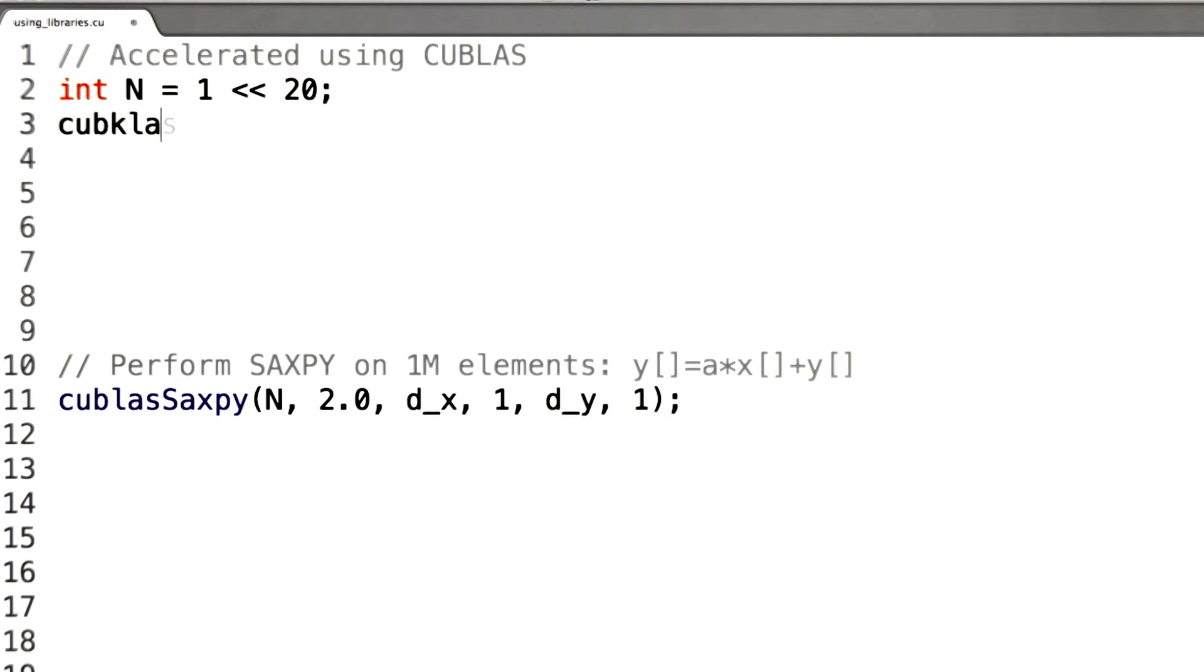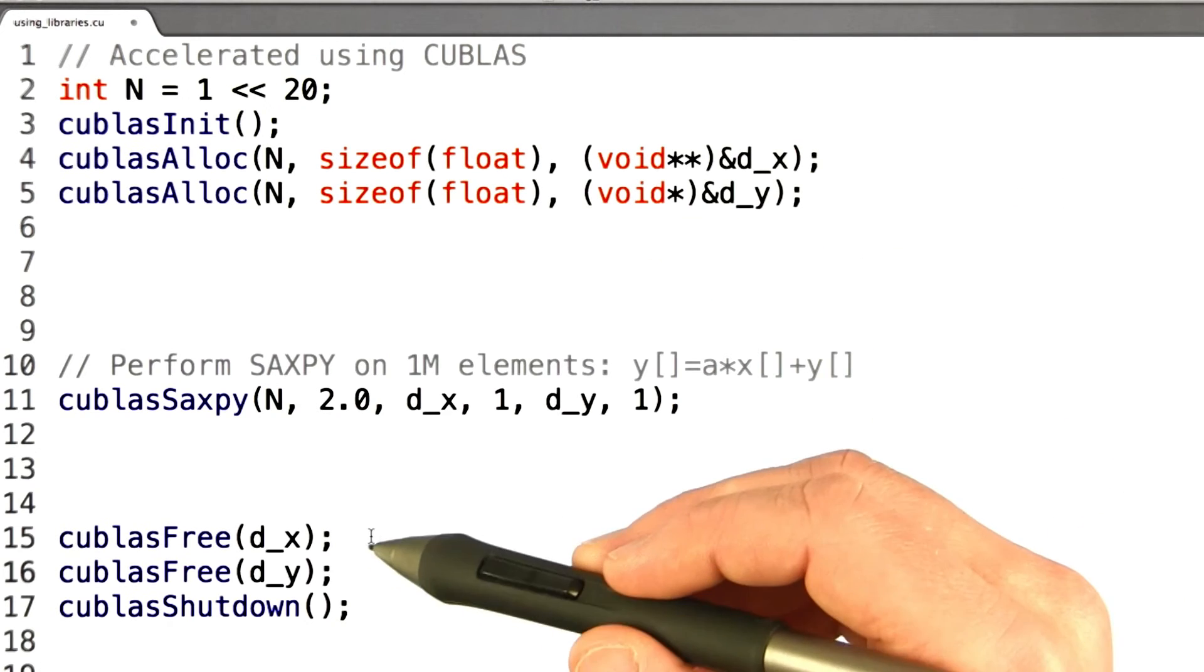Next, we need to initialize CUBLAS and shut it down again when we're done. And now we need to allocate those device vectors and free them when we're done.